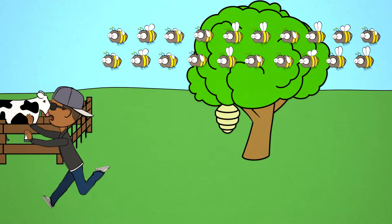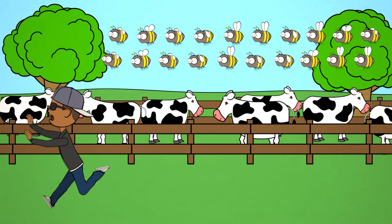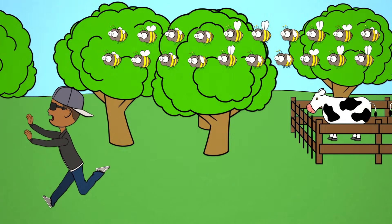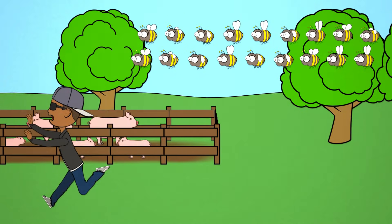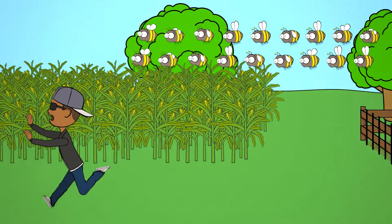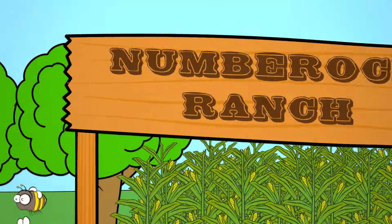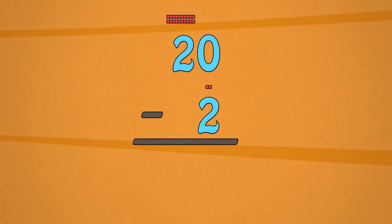There are 20 bumblebees flying around me, so I yell 'shoo' and two decide to leave. Now how many bumblebees are chasing me? If we regroup we can find the difference with ease. Zero minus two, here's what to do because the zero is smaller than the two.